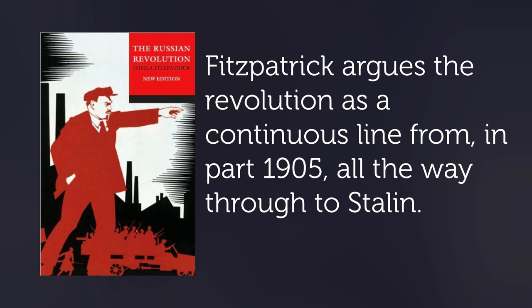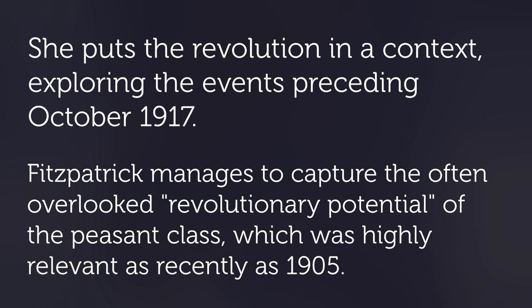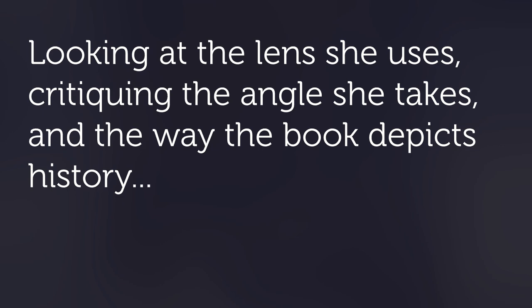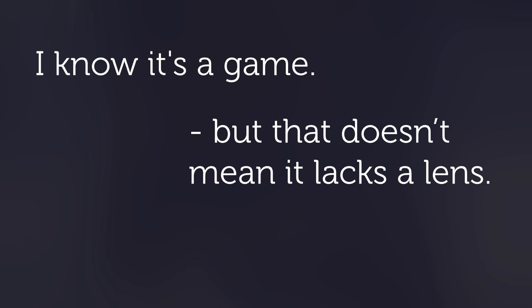This does a few things. Some positives: she puts the revolution in context, exploring the events preceding October 1917. In doing so, Fitzpatrick manages to capture the often-overlooked revolutionary potential of the peasant class, which was highly relevant as recently as 1905. Some weaknesses of this lens emerge as the book goes on. Looking at the lens she uses, critiquing the angle she takes, and the way the book depicts history — all of that is historiography, and this process can be put onto Victoria 3.